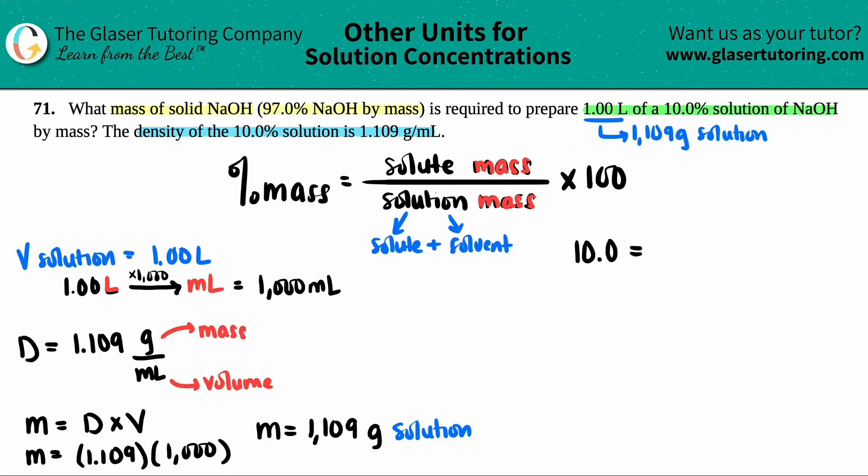10.0 equals something over something times 100. I don't know my solute mass, which is what they're trying to solve for, divided by the 1,109 grams. And then times by 100. So let's do it. Let's divide by 100 to get rid of that 100. And then it becomes like a simple ratio. So this is 0.1 equals X over 1,109. Cross multiplication. I get X equals, 0.1 times 1,109. Yeah. 110.9.